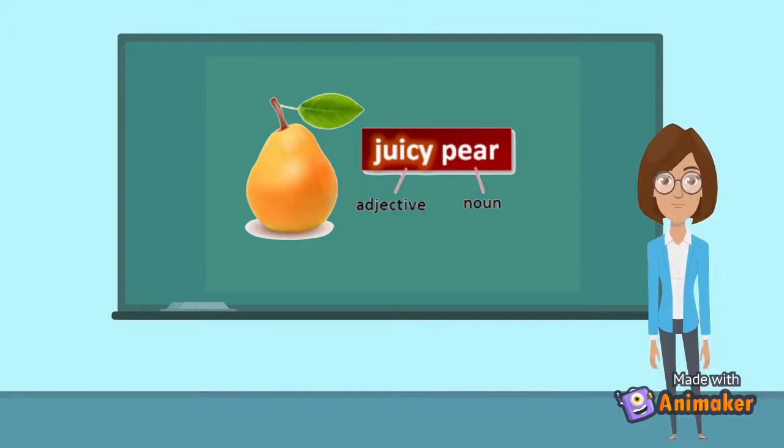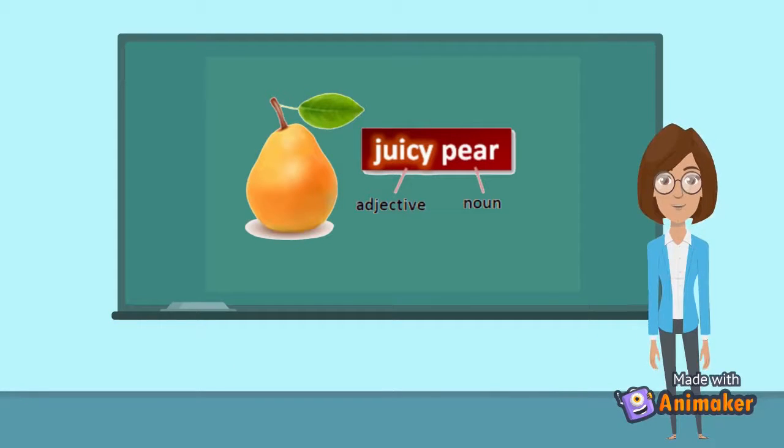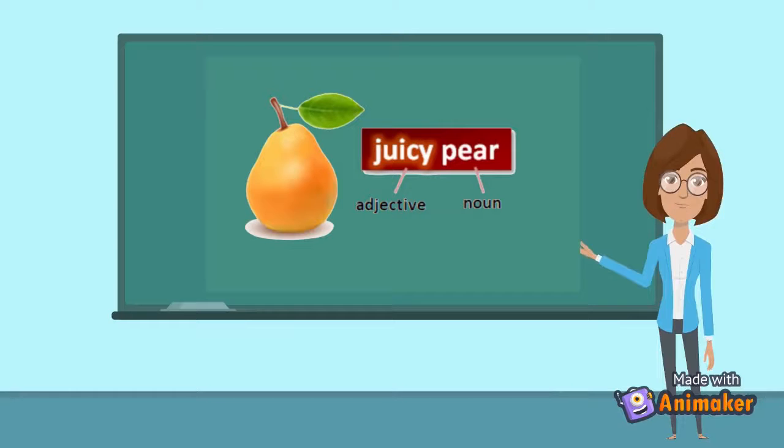As you can see on the board, the sentence juicy pear. Juicy in this sentence is the adjective word and pear is the noun.